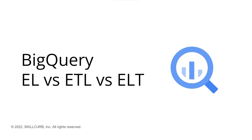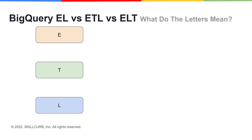BigQuery EL versus ETL versus ELT. You'll notice that in each of these three terms — EL, ETL, and ELT — the letters E, L, and T are just being shifted around. So the first part to understanding the terms is understanding what the letters mean, and then we can move from there.